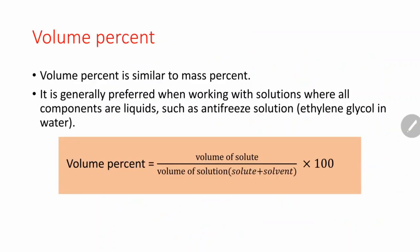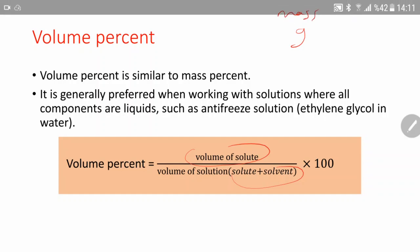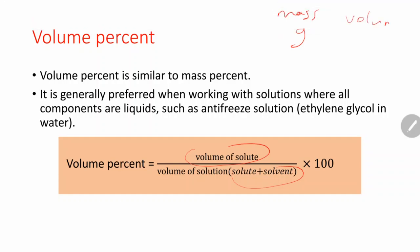Volume percent is similar to mass percent — it's easy: volume of solute over volume of solution, multiplied by 100. But here we don't use grams; we use a volume unit like milliliter, liter, or cubic centimeter. Volume percent is generally preferred when working with solutions where all components are liquids, for example antifreeze solutions like ethylene glycol in water.